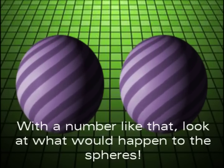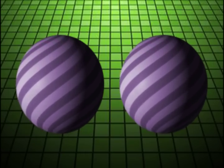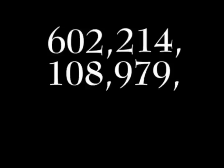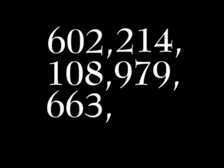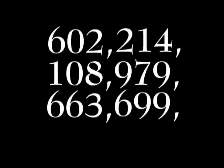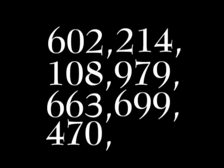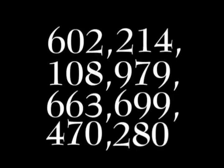With a number like that, look at what will happen to the spheres. The actual number is 602 sextillion, 214 quintillion, 108 quadrillion, 979 trillion, 663 billion, 699 million, 470,208. But it's usually shortened to 6.02 times 10 to the 23rd.